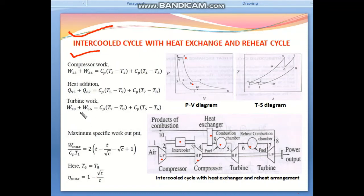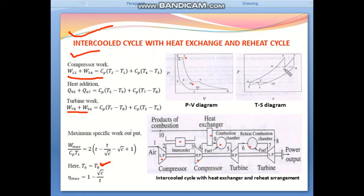The maximum specific work output — turbine work minus compressor work — divided by Cp·T1 equals 2t − t/√C − 2√C + 1, assuming T6 = T8. The maximum efficiency for this combined cycle is: η = 1 − √C / t.